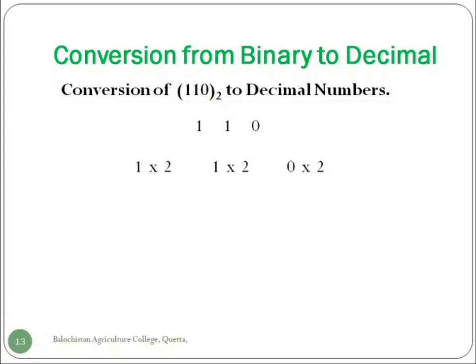The second step is putting power on 2, starting from 0: 2 raise to the power 0, 2 raise to the power 1, 2 raise to the power 2. Calculating these values, we get 4 plus 2 plus 0, and the answer is 6. I hope that you have learned how we can convert a binary number back to decimal number.